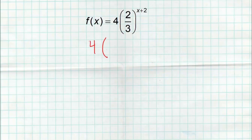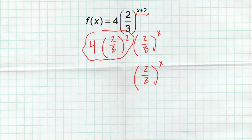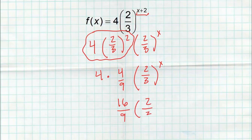Let's look at one more of this type: 4 times (2/3) to the x+2. I'll leave that 4 alone and separate into (2/3) to the 2nd times (2/3) to the x. It's multiplication, so order doesn't matter. I have my b value, (2/3) to the x. My a value is 4 times (2/3) squared, which is 4 times 4/9, giving 16/9. So 16/9 is my a value, 2/3 is my b value, all raised to the x. I manipulated the function to make it look like the form I want.